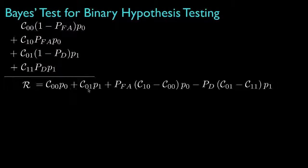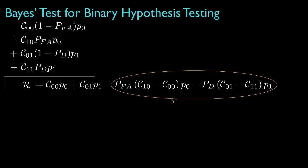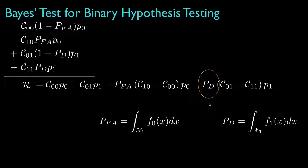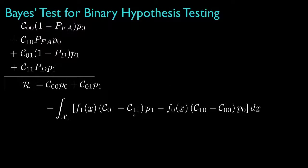Now if we rearrange the terms, we'll get a couple of terms that depend only on the costs and the prior probabilities, and we'll get a couple of terms that depend on the false alarm and the detection probabilities. Because the false alarm probability is the probability that we select hypothesis 1 when hypothesis 0 is true, this is the integral of the density for hypothesis 0 over the classification region X1. And because the detection probability is the probability we select hypothesis 1 when hypothesis 1 is true, this is the integral of the density for hypothesis 1 over the classification region for X1. Accordingly, we can rewrite those terms as an integral over the classification region for hypothesis 1.